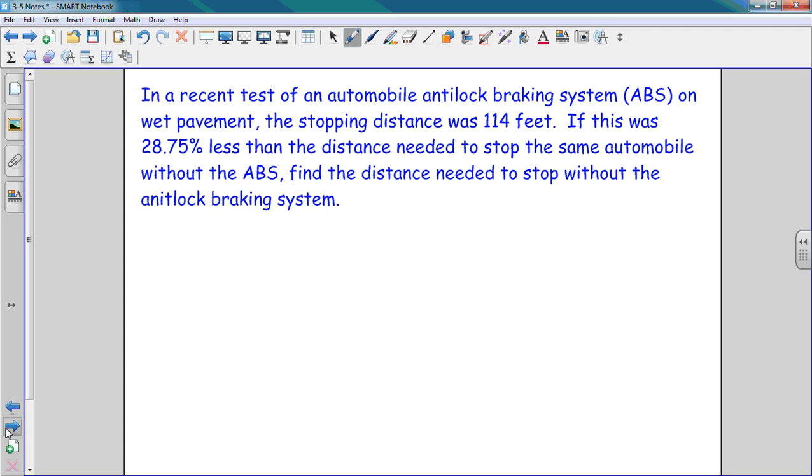In a recent test of an automobile analog braking system, also known as ABS, on wet pavement, the stopping distance was 114 feet. If this was 28.75% less than the distance needed to stop the same automobile without the ABS, find the distance needed to stop without the analog braking system. So we have a decrease problem. I know I'm going to use B times 1 minus R equals T. What's my total? What's my base? And what's my rate?